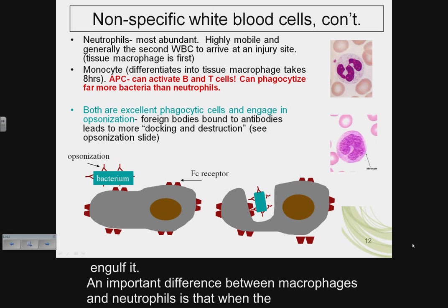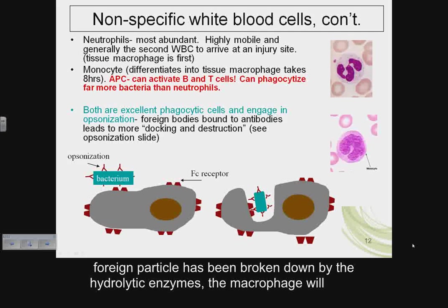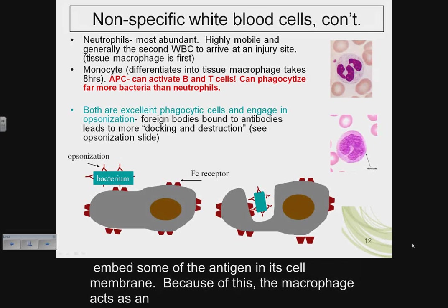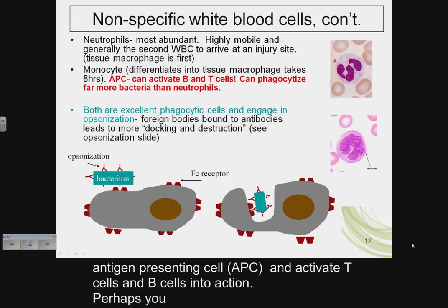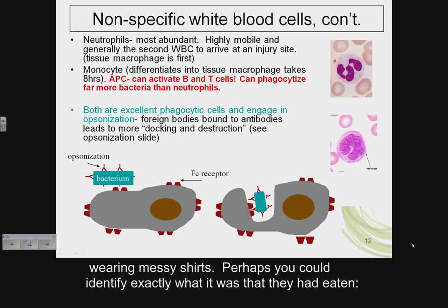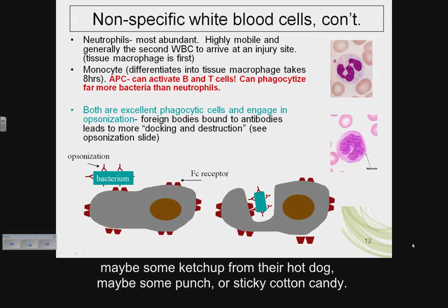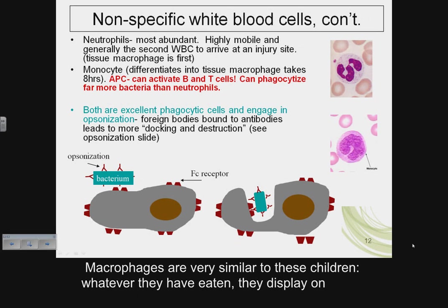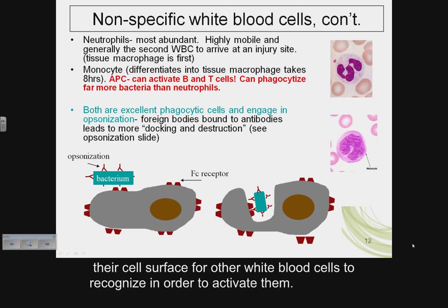An important difference between macrophages and neutrophils is that when the foreign particle has been broken down by hydrolytic enzymes, the macrophage will embed some of the antigen in its cell membrane. Because of this, the macrophage acts as an antigen presenting cell (APC) and activates T cells and B cells into action. This is similar to children wearing messy shirts displaying what they ate — macrophages display ingested antigens on their cell surface for other white blood cells to recognize and activate them.